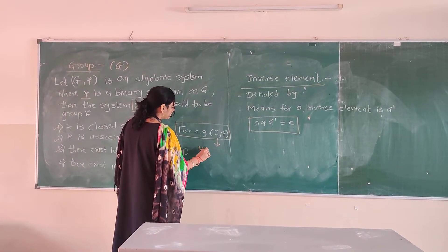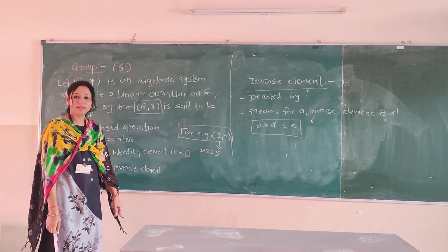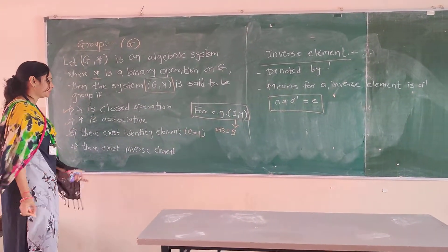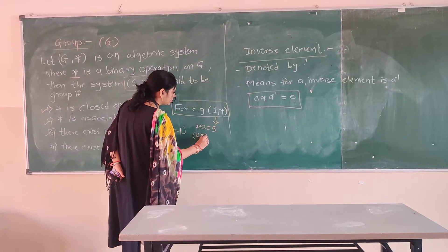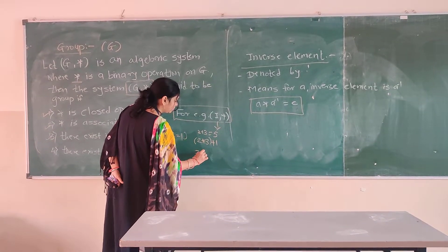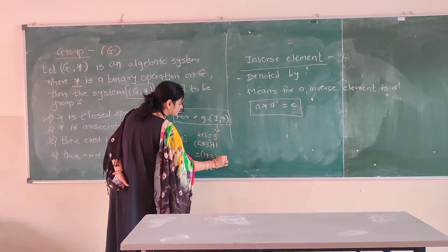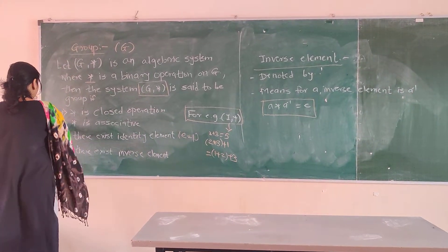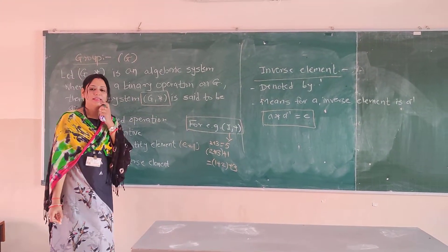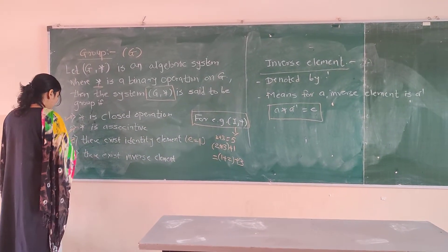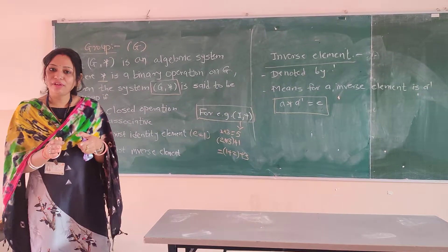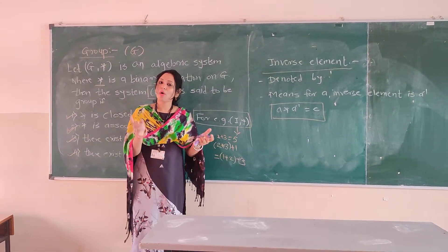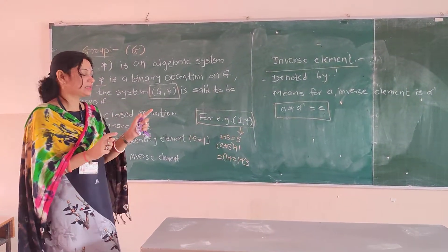For example, 2 + 3 = 5, and 5 is also an integer, so it is closed. For associativity: (1 + 2) + 3 still gives the same value as 1 + (2 + 3), both equal 6 — that is why it is associative. There exists an identity element — yes, because 0 is present in integers. And there exists an inverse element — yes, because for every integer we have an additive inverse. As the given algebraic system satisfies all the properties of a group, we can say that (I, +) is a group.